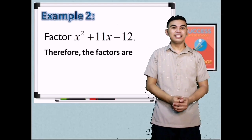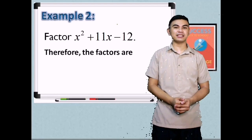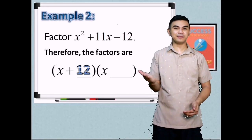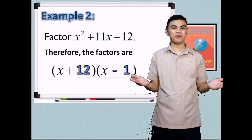Therefore, the factors of x squared plus 11x minus 12 are x plus 12 and x minus 1.